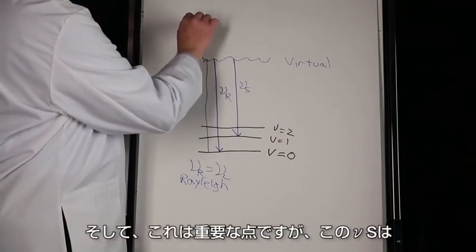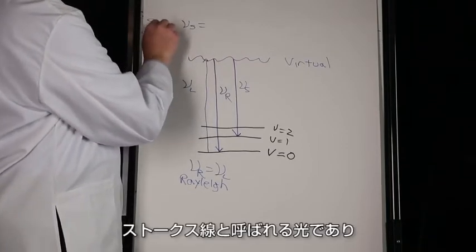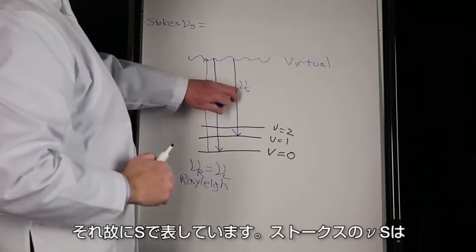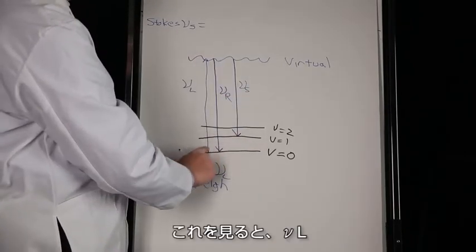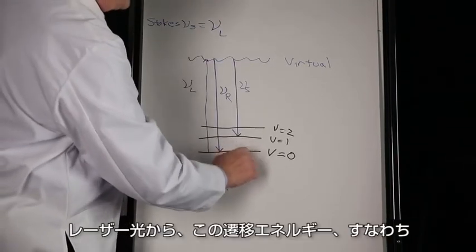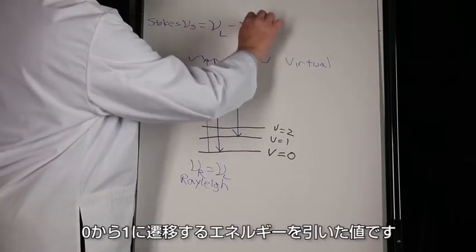And critically, νS, which is called the Stokes line and hence the S, the νS in Stokes is equal to, if we look at it, it's going to be νL, the laser, minus this transition energy, minus ν...